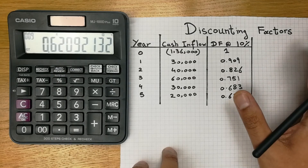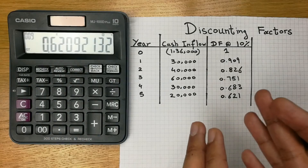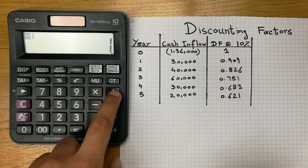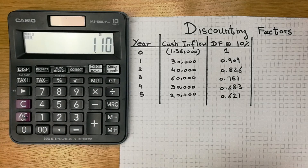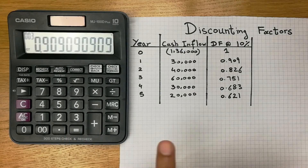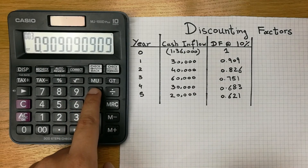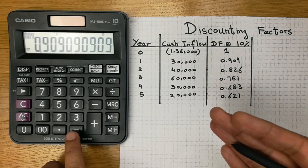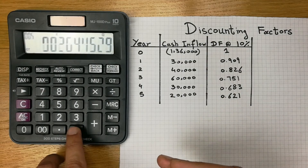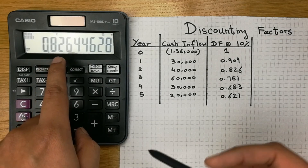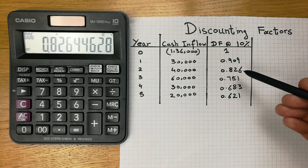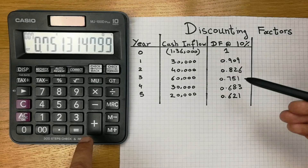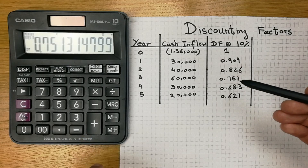Let me repeat the steps. Press 1 divided by 1.10, then press the equal button. Next, press the multiply button two times, and then start pressing the equal button to get the discount factor for each subsequent year. Press equals to get 0.826 for the second year, and keep pressing for the following years.